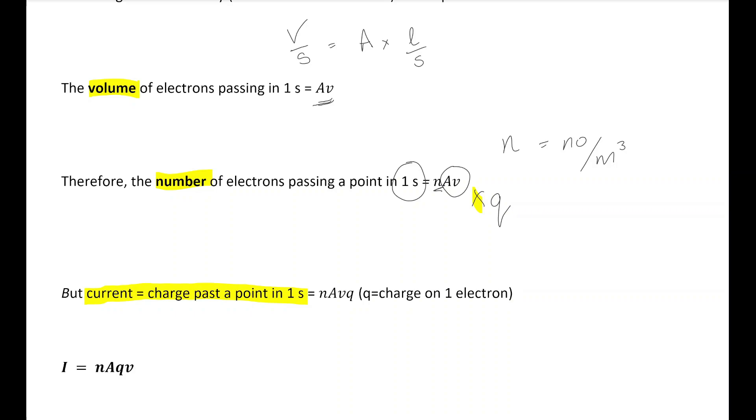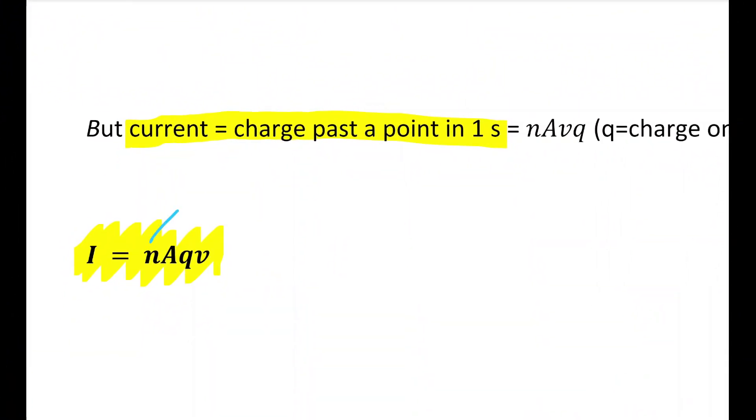And this equation, also given in your data book, I is equal to nAqv. Remember, our n is our charge carriers per meter cubed. A is the cross-sectional area of the wire. q is a constant. It's 1.6 times 10 to the minus 19 coulombs because that's what electronic charge is. And v is called our average drift velocity of the charge carriers or the electrons. And this, as a result, is called the drift velocity equation.